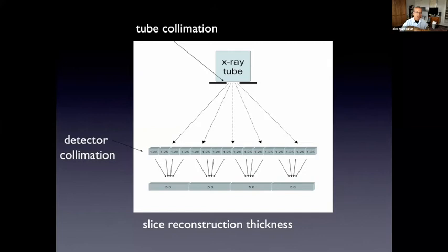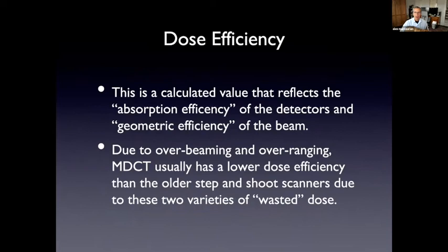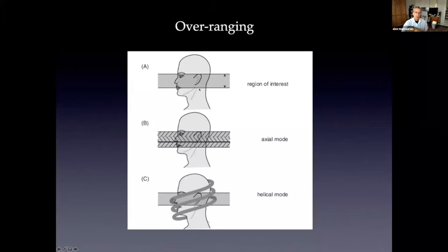So this brings us to this concept of dose efficiency. Dose efficiency is a calculated value that reflects the absorption efficiency of the detectors and the geometric efficiency. In a sense, how much of the beam is used to create the image? Now multi detector scanners has two problems. One is called overbeaming and one's overranging.